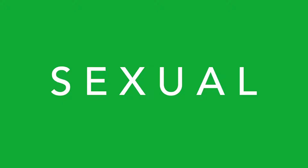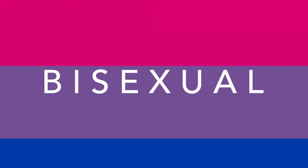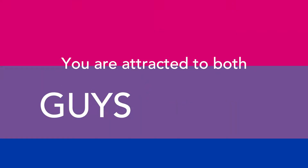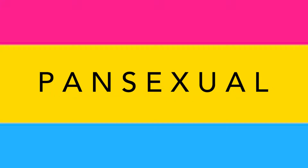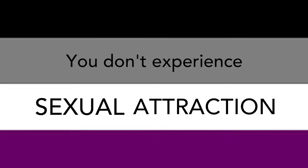This brings us to sexual orientation, which is what gender someone is sexually attracted to. There is heterosexual and homosexual, which at this point everyone knows what they are. Bisexual means that you're attracted to both guys and girls. There is pansexual, which means that you are attracted to all genders. There is also asexual, which means you don't experience sexual attraction.